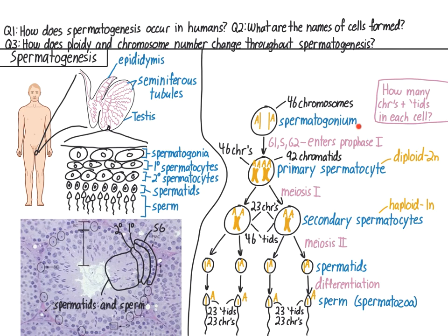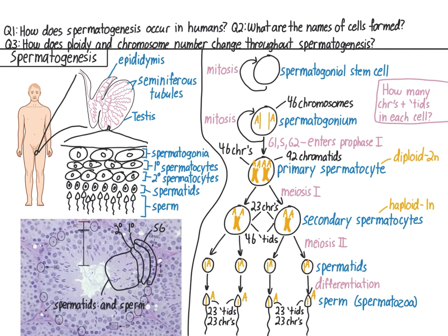Now, if all the spermatogonia underwent meiosis all at once, soon there wouldn't be any spermatogonia left to produce more sperm. Fortunately, this does not happen, because some spermatogonia, instead of undergoing meiosis, undergo mitosis, making more of themselves. So a constant supply of spermatogonia is produced by mitosis. One might ask: what made the first spermatogonia? These were formed when spermatogonial stem cells, which can also renew themselves by mitosis, developed into spermatogonia. This starts to occur when the male is just an embryo. But in adult males, the spermatogonia can replenish themselves by mitosis.